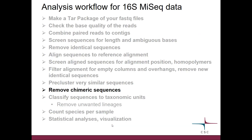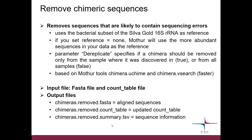The next step is removing chimeric sequences. Chimeras are sequences which actually match two reference sequences, so these are very likely to be sequencing errors. Here we use as a reference the bacterial subset of the SILVA 16S reference set. You can also decide not to use any reference, in which case Mothur will use the more abundant sequences in your data as the reference.